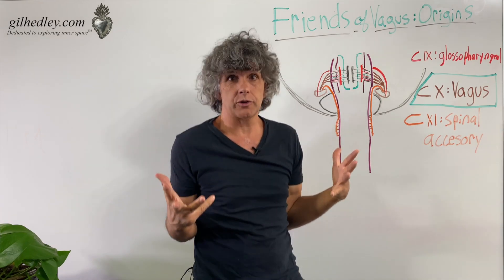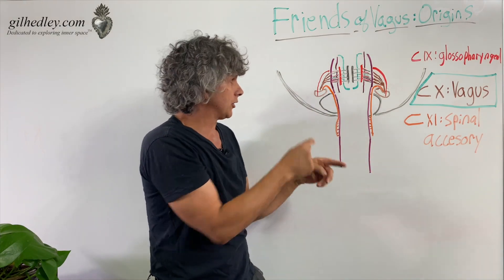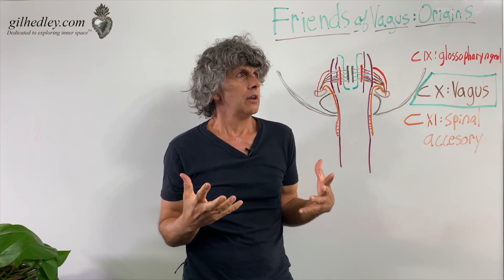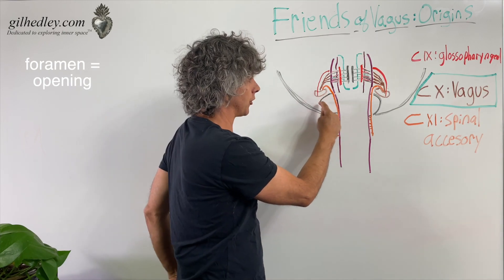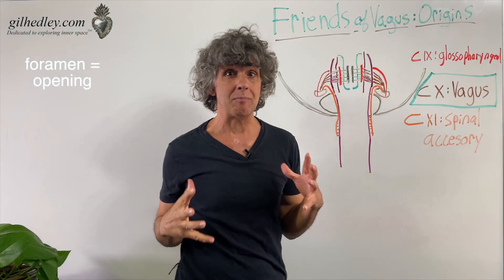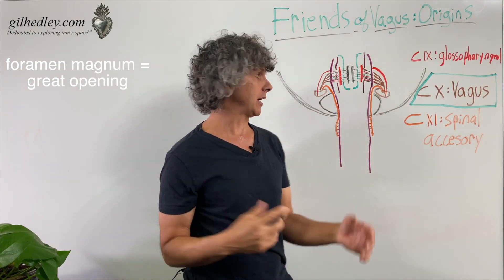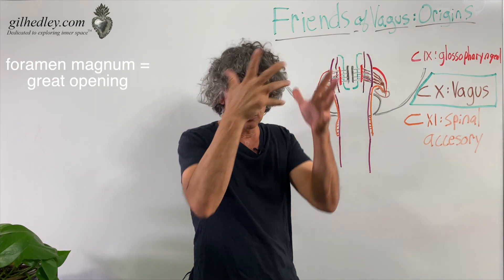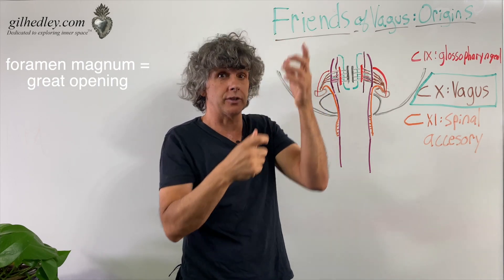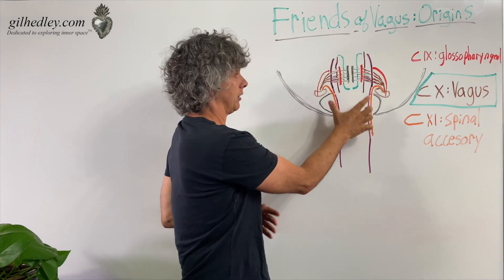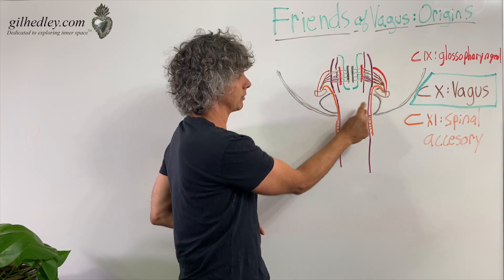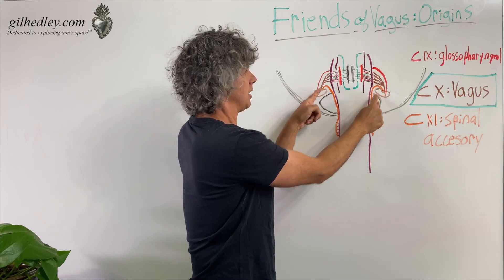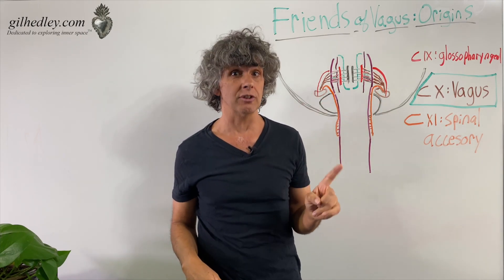Where is it going — where does it wander to first? It meanders its way out of a foramen. A foramen is an opening. Here's a huge foramen called the foramen magnum — the great opening of the skull at the base in the occiput — through which the spinal cord passes in communication with the brain. And then we see this little kidney-bean shape here — that's another foramen.